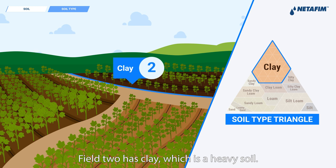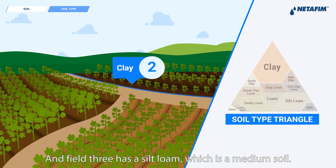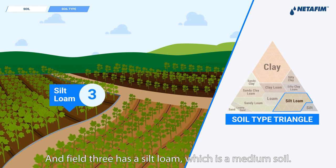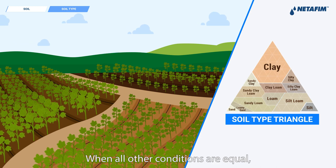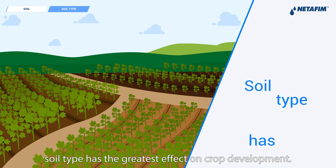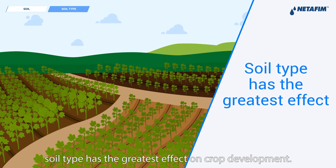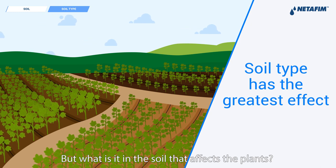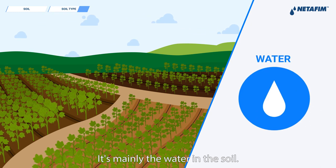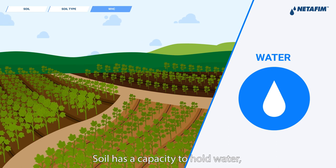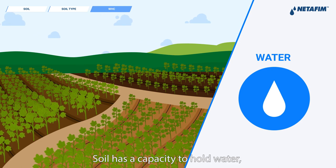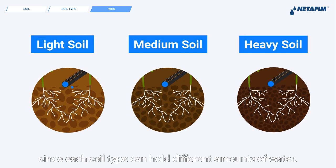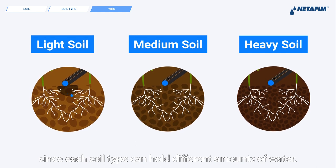Field two has clay, which is a heavy soil, and field three has silt loam, which is a medium soil. When all other conditions are equal, soil type has the greatest effect on crop development. But what is it in the soil that affects the plants? It's mainly the water in the soil. Soil has a capacity to hold water, and with each soil type the capacity varies, since each soil type can hold different amounts of water. We call this water holding capacity.